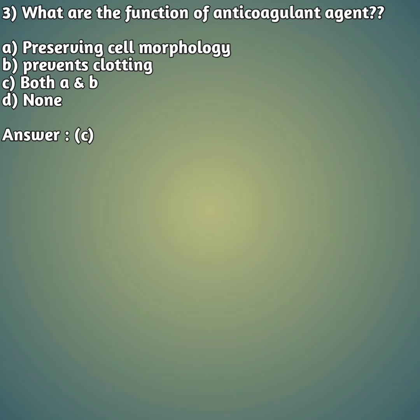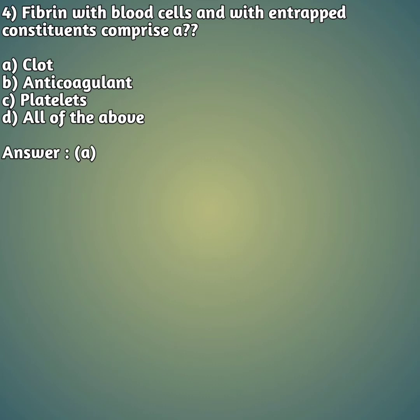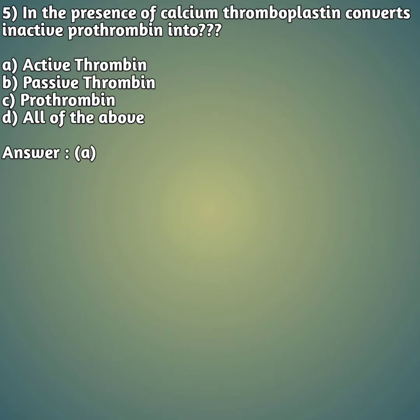Fourth question: fibrin with blood cells and entrapped constituents comprises — option A: clot, option B: anticoagulant, option C: platelets, option D: all of the above. The right answer is option A, clot. Fibrin with entrapped blood cells is what we call clot formation. Presence of fibrin is almost equal to clot formation itself.